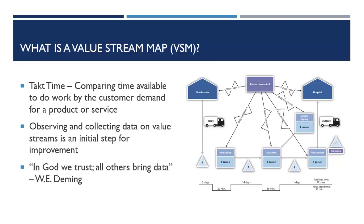For many standard processes, well-established process steps and metrics or performance standards may already exist, creating an established baseline for performance. Takt time is a calculation that compares the time available to do work by the customer demand for a product or service. The term Takt is derived from the German word Taktzzeit, which translates to the cycle time or pace at which the process steps are completed.